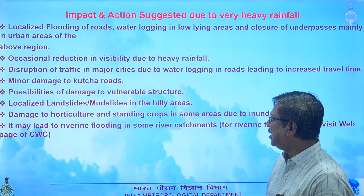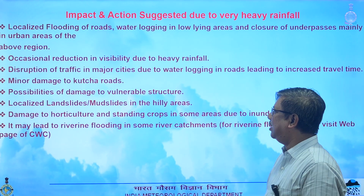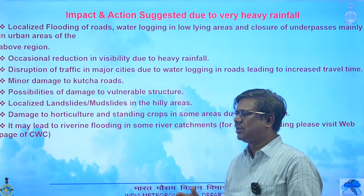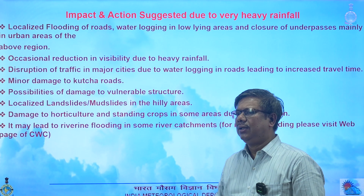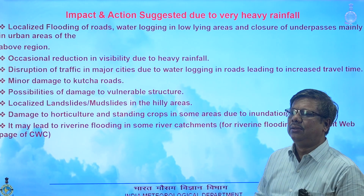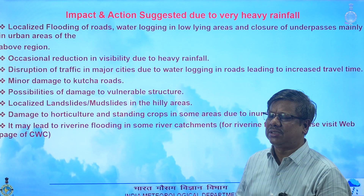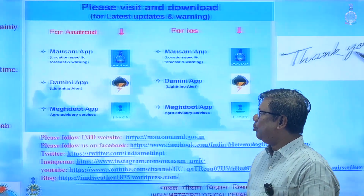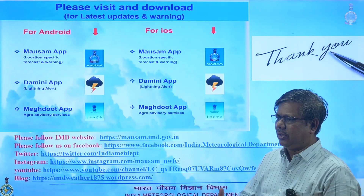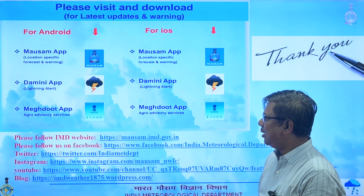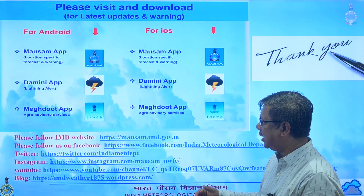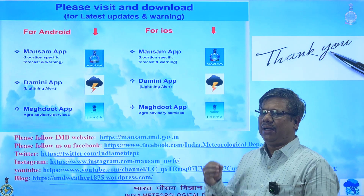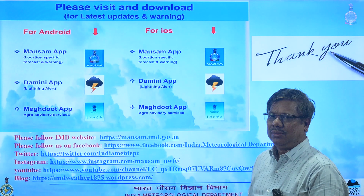Since heavy rain is occurring consecutively over several days, there may be occasional landslides and mudslides in hill areas, and damage to horticulture and standing crops in some areas. Because it is raining heavily everywhere, rivers are full and may cause danger and river flooding. Viewers can visit the Central Water Commission (CWC) website for river flood information. For more weather information, users can visit the IMD websites, all social media handles, and mobile apps to get direct weather information on their mobiles.